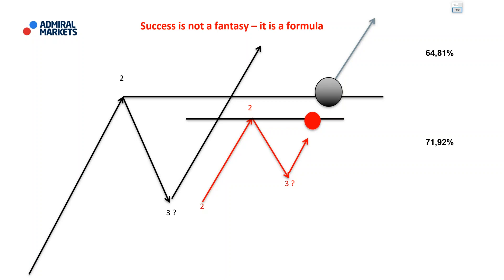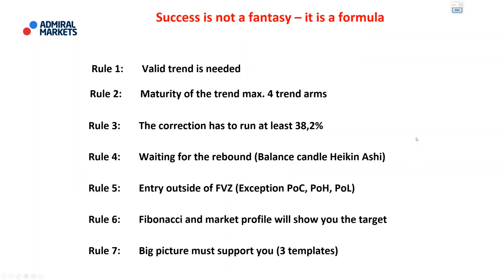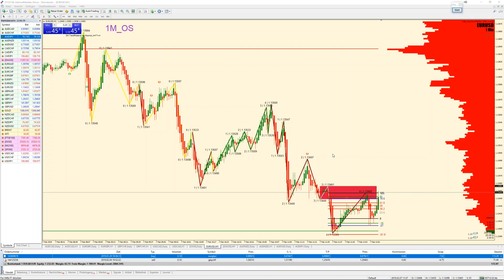This is my trading approach with probabilities between 65 and 72 percent — trading out of the correction in the direction of the trend, because trend continuation is always more likely than a trend break. We have several rules: a trend is needed, the maturity of the trend, the correction must run at least 38 percent Fibonacci retracement, we wait for the rebound, Heikin Ashi helps with balance candles, and rules five through seven concern the surrounding, fair price, target via Fibonacci and market profile, and the big picture must support us.